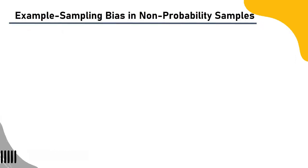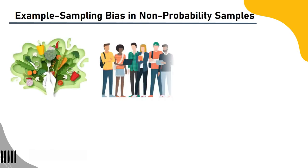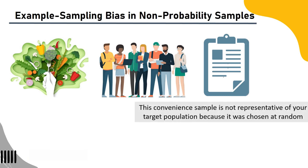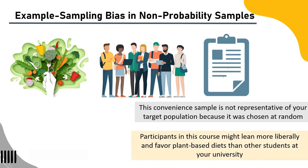Example of sampling bias in non-probability samples: You wish to research how well-liked plant-based foods are among your university's undergrads. You distribute a survey to all students taking introduction to psychology courses out of convenience, and they complete it to receive course credit. This convenience sample is not representative of your target population, as participants in this course might lean more liberal and favor plant-based diets than other students at your university.